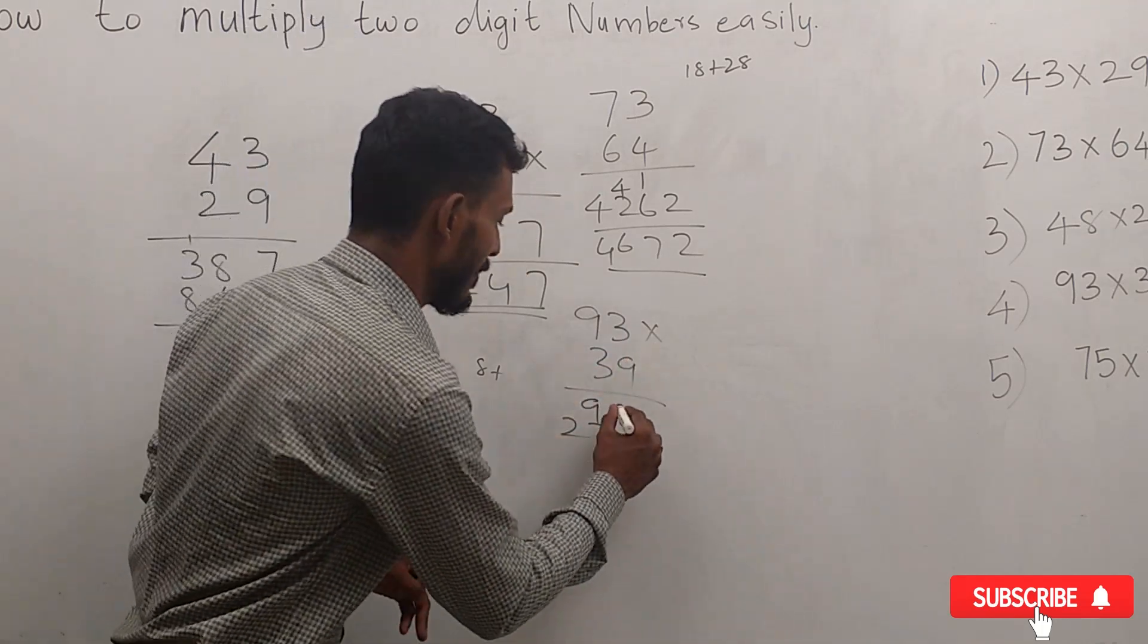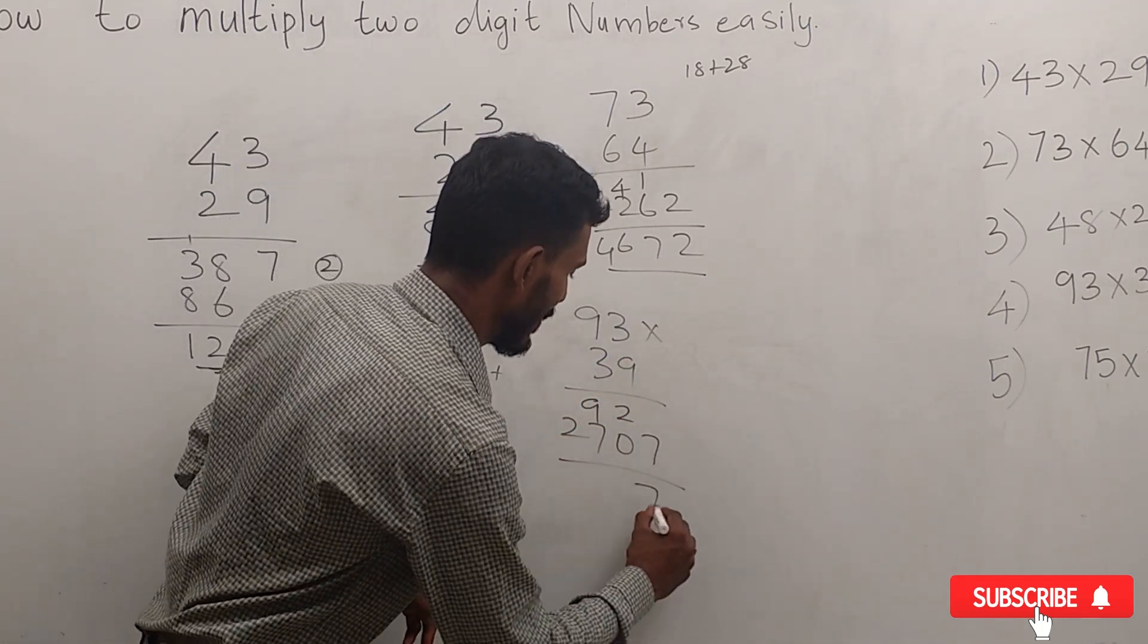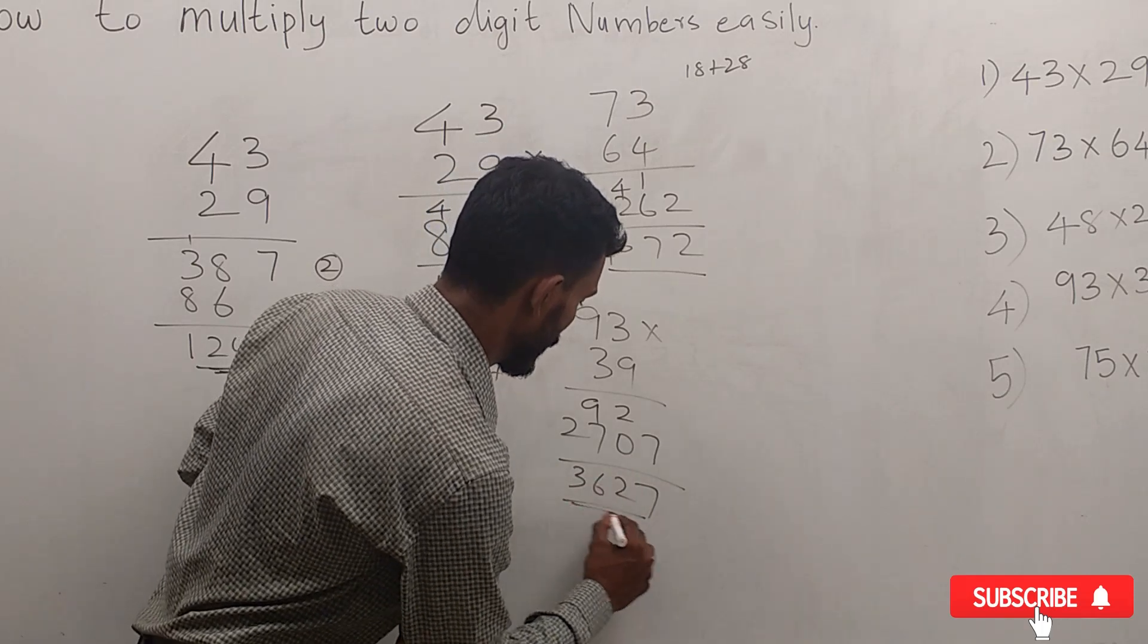3 × 9 = 27. So we get 7, 2, 16. That's 3, 6, 2, 7.